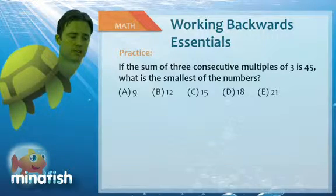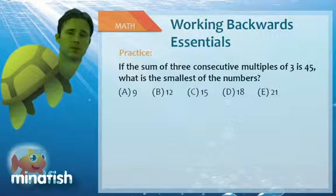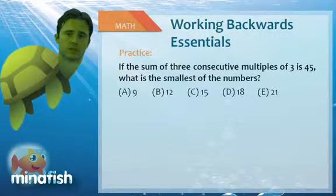So this question says, if the sum of three consecutive multiples of 3 is 45, what is the smallest of these numbers?